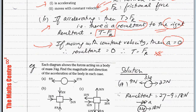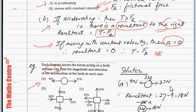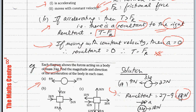Each diagram shows the forces acting on a body of mass 3 kg. Find the magnitude and direction of acceleration on the body in each case. For part A, we have 27 N to the right and 9 N to the left. The resultant will be to the right: 27 minus 9 gives us 18 N to the right.